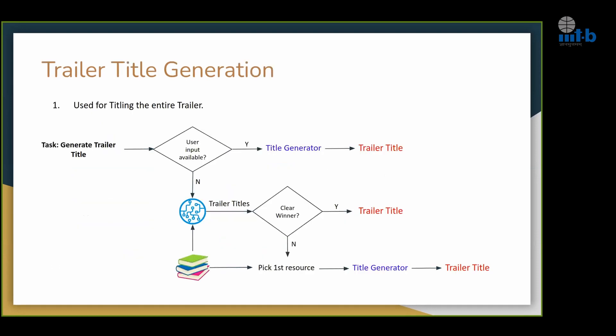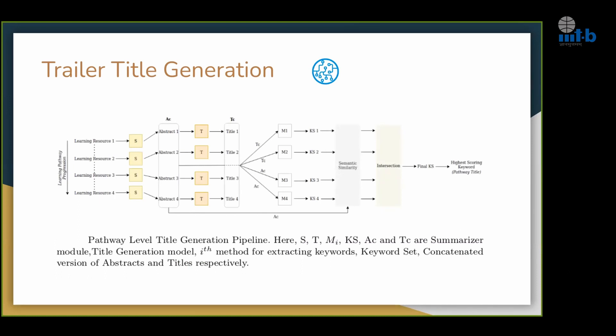For generating the title for the entire trailer: if the creator enters a summary in the creator's dashboard, we pass it through the title generator system to get the trailer title. If not, we fall back to a keyword-style title generation system — if there's a clear winner, we select that title. Otherwise, we fall back to a final resort: we take the first resource in the pathway, consider it the introductory resource, generate a title for it, and that becomes the title for the entire trailer. This keyword-style title generation system takes a learning resource and processes it through the pipeline.